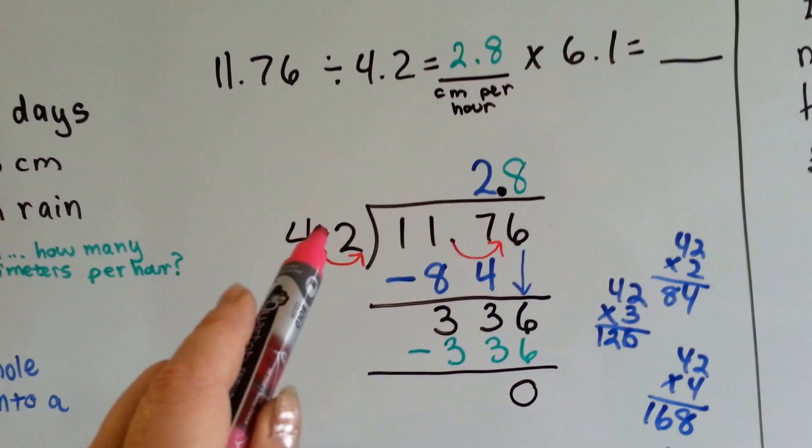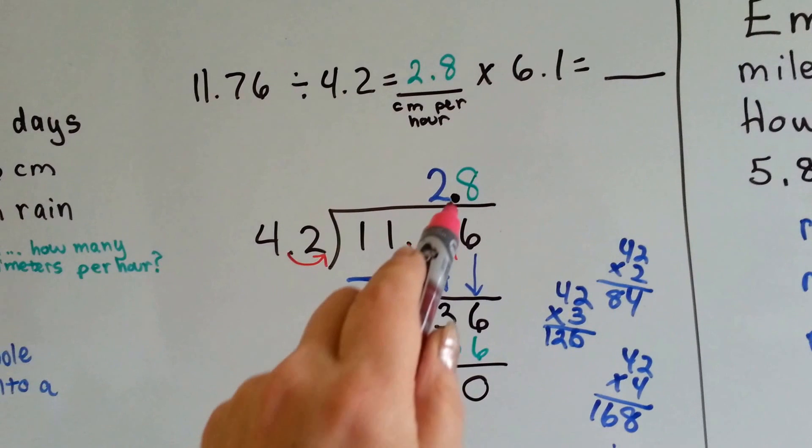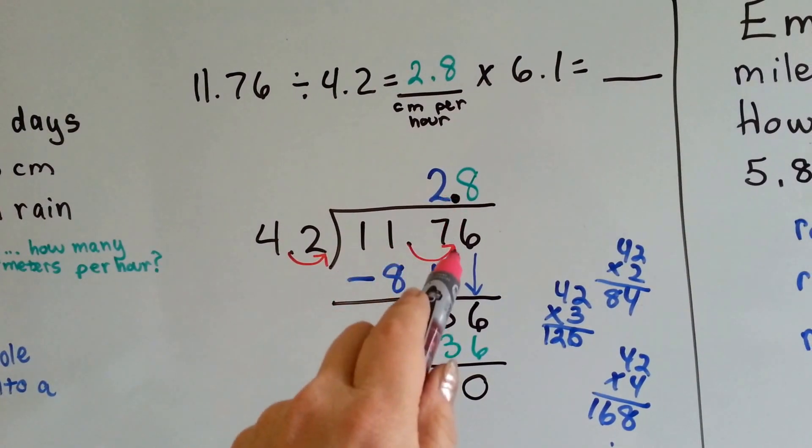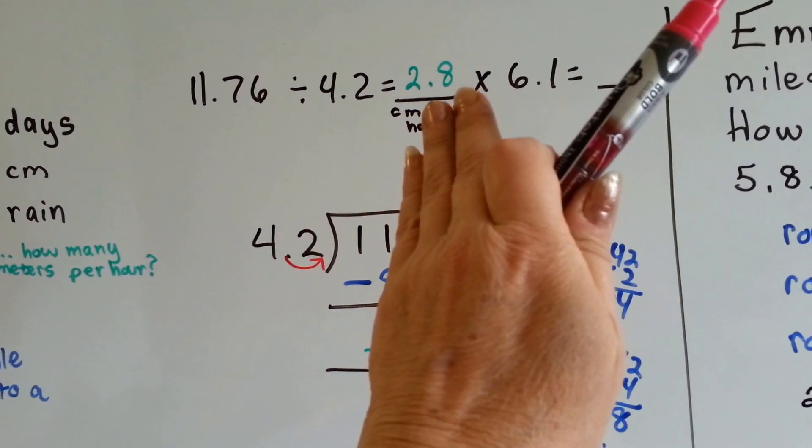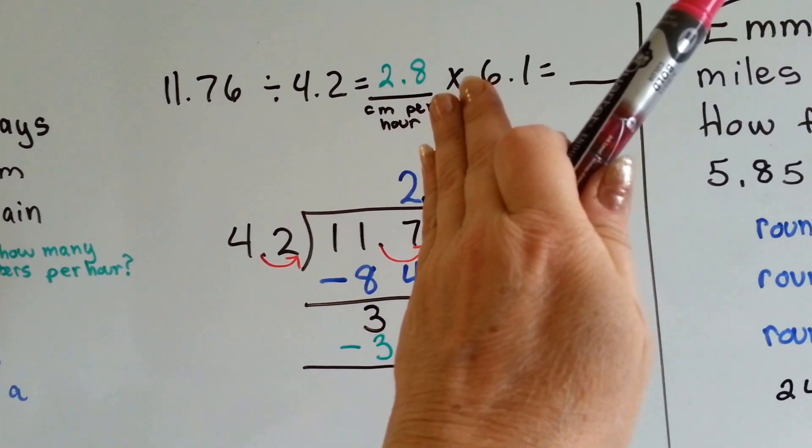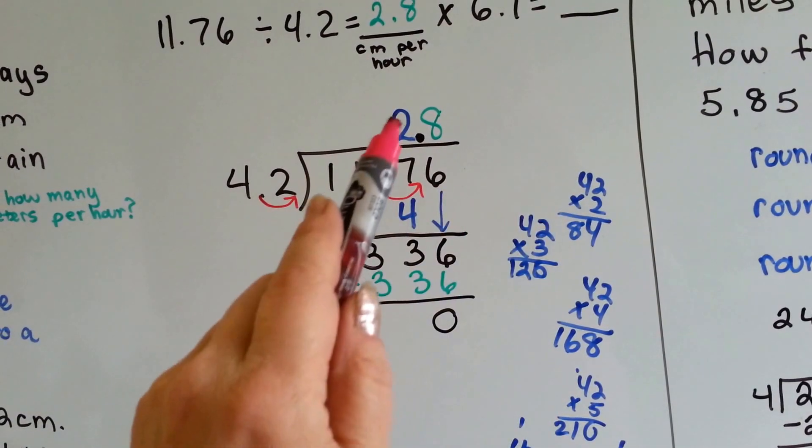The first thing we do is we set up our division problem, and we move our decimal point. It's going to put it right up here. It's going to move and go right up here. 42 can't go into 1 or 11, but it can go into 117. From doing our math on the side, we see 3 is too big, but 2 could work.